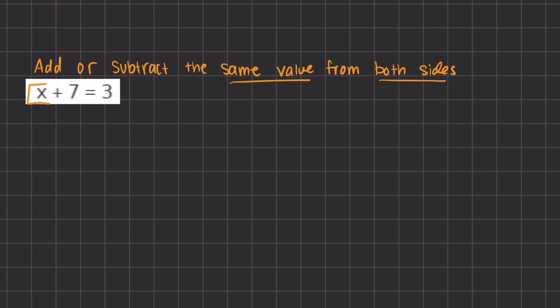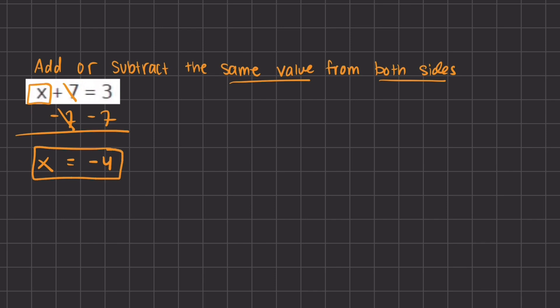If we want to find and define the value of x, we have this 7 that is in the way, so we don't know its true simplified value. We want to get rid of the 7 by subtracting it on both sides. What we have left on the left-hand side is x, because the positive 7 and negative 7 cancel out. On the right-hand side, we have 3 minus 7, which gives us negative 4. So x equals negative 4, the simplified value of x.